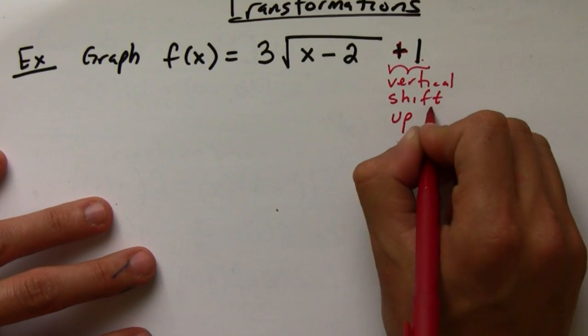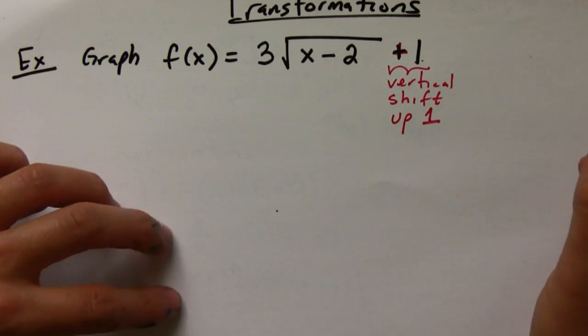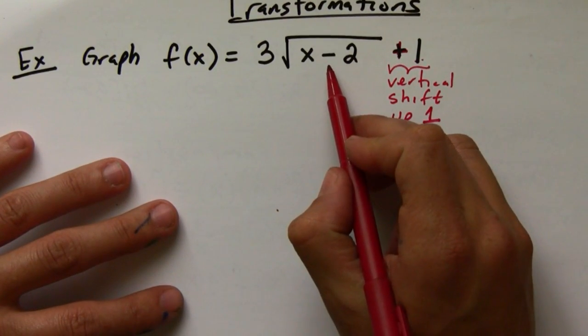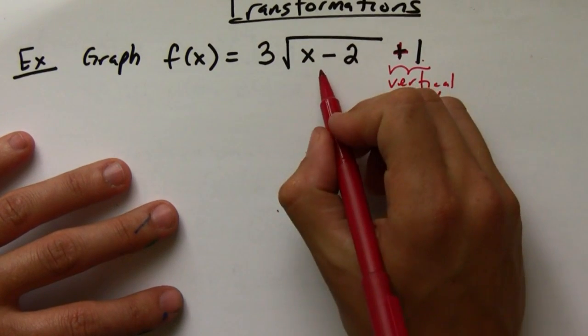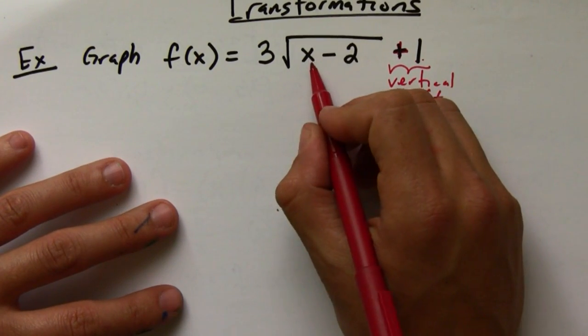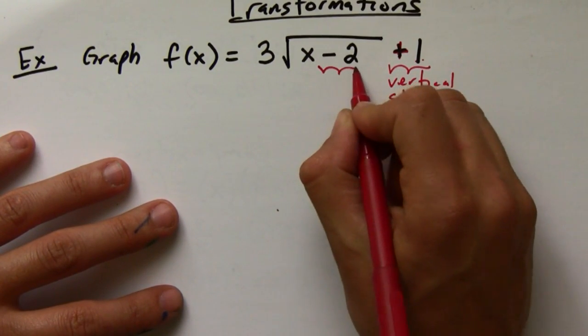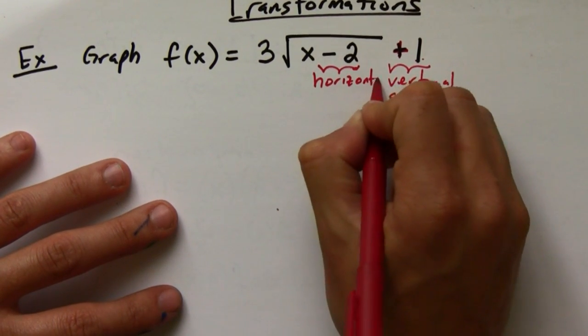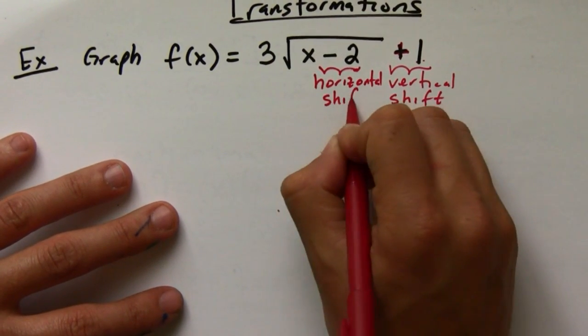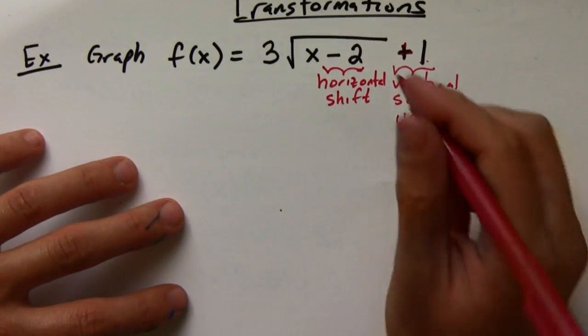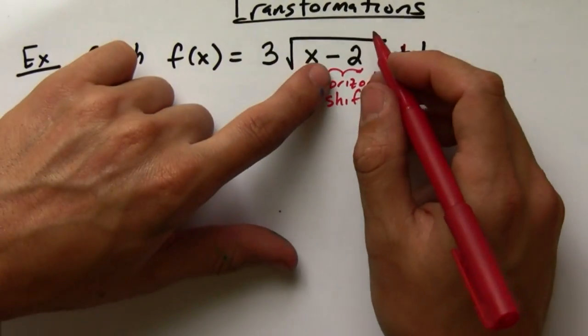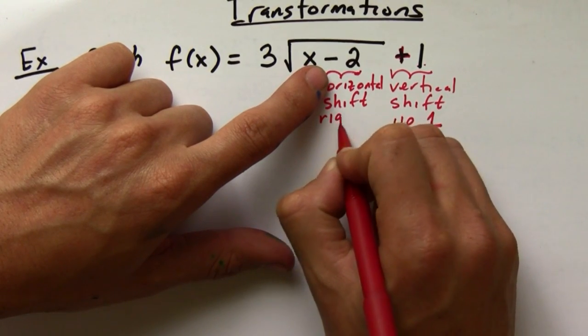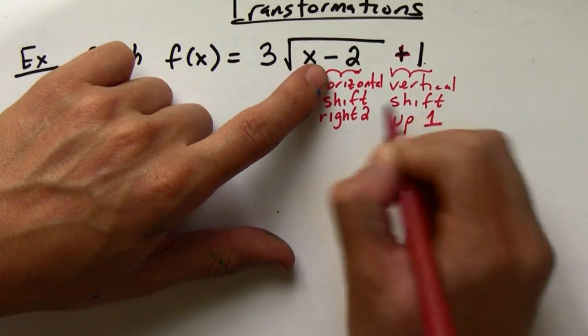Now here, this minus two, I'm subtracting from x. So any number that's adding or subtracting to x, this is a horizontal shift. But this one's always backwards from what it looks like. So it's negative two, which means I'm going to go in the positive direction, which is to the right, by two.